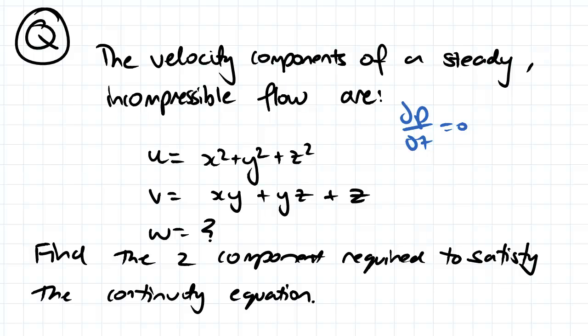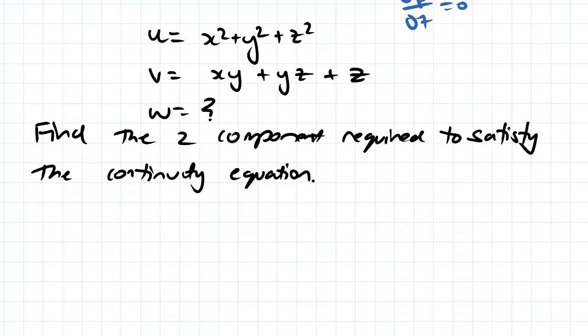This means we can use a simplified version of the 3D continuity equation: ∂u/∂x + ∂v/∂y + ∂w/∂z = 0. We can only do that because we have a steady incompressible flow.